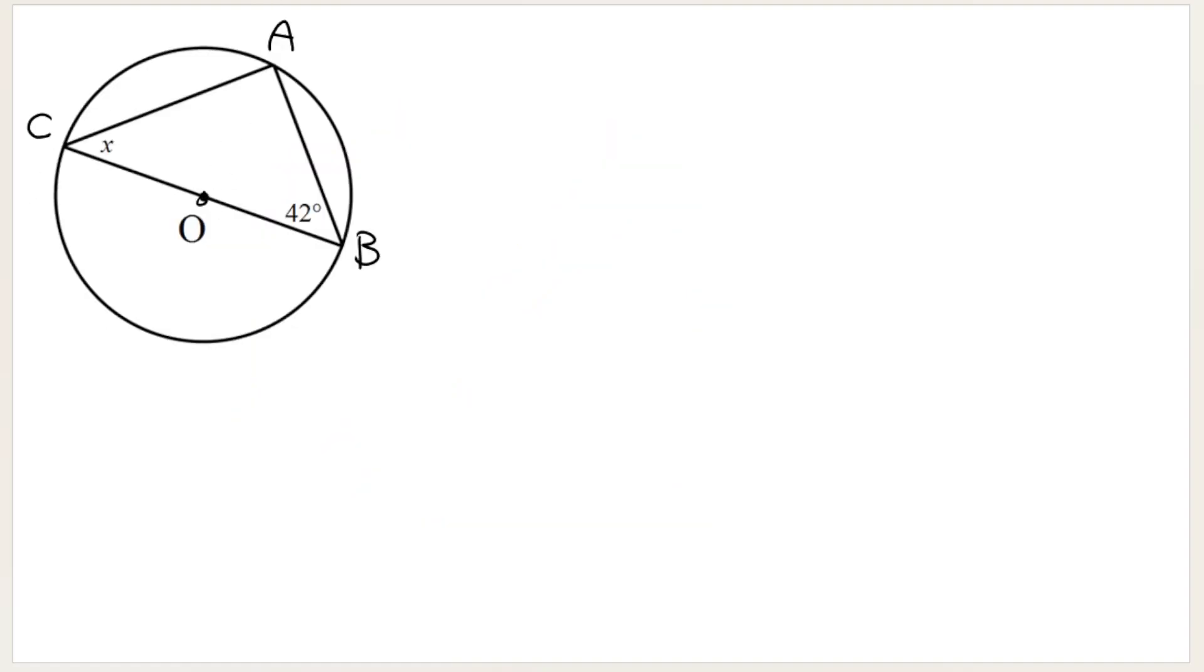So if I were to tell you, for example, that O is the center of the circle, and I ask you to find this value over here that is called X, immediately I hope that you are seeing, if O is the center of the circle, then CB or BC is a diameter, and this angle over here, the straight line, is 180. So this angle over here, we have to call it CAB, let's just name it properly, CAB or BAC, this angle over here is 90.